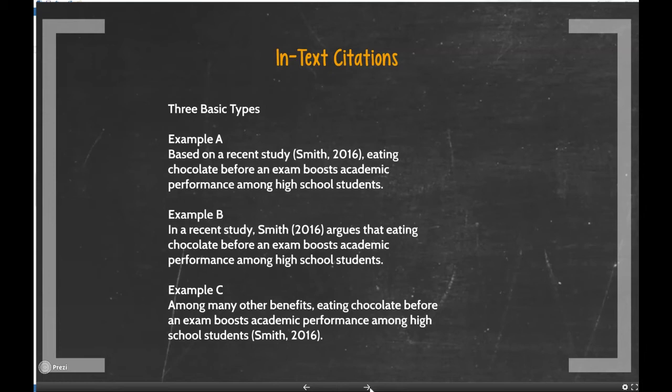The first one, Example A, is where the study or article is referenced just by its name. So you might write: 'Based on a recent study (Smith, 2016), eating chocolate before an exam boosts academic performance among high school students.' The author and year are in parentheses. By the way, this study is made up — it's just an example I'm using.